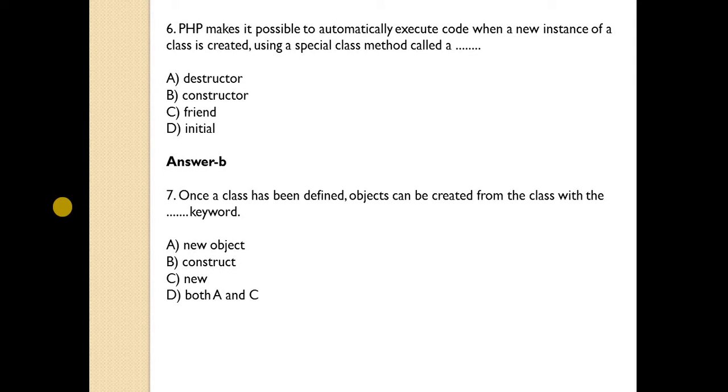Next, once a class has been defined, objects can be created from the class with a dash keyword. New keyword is used to create object. Answer is C.